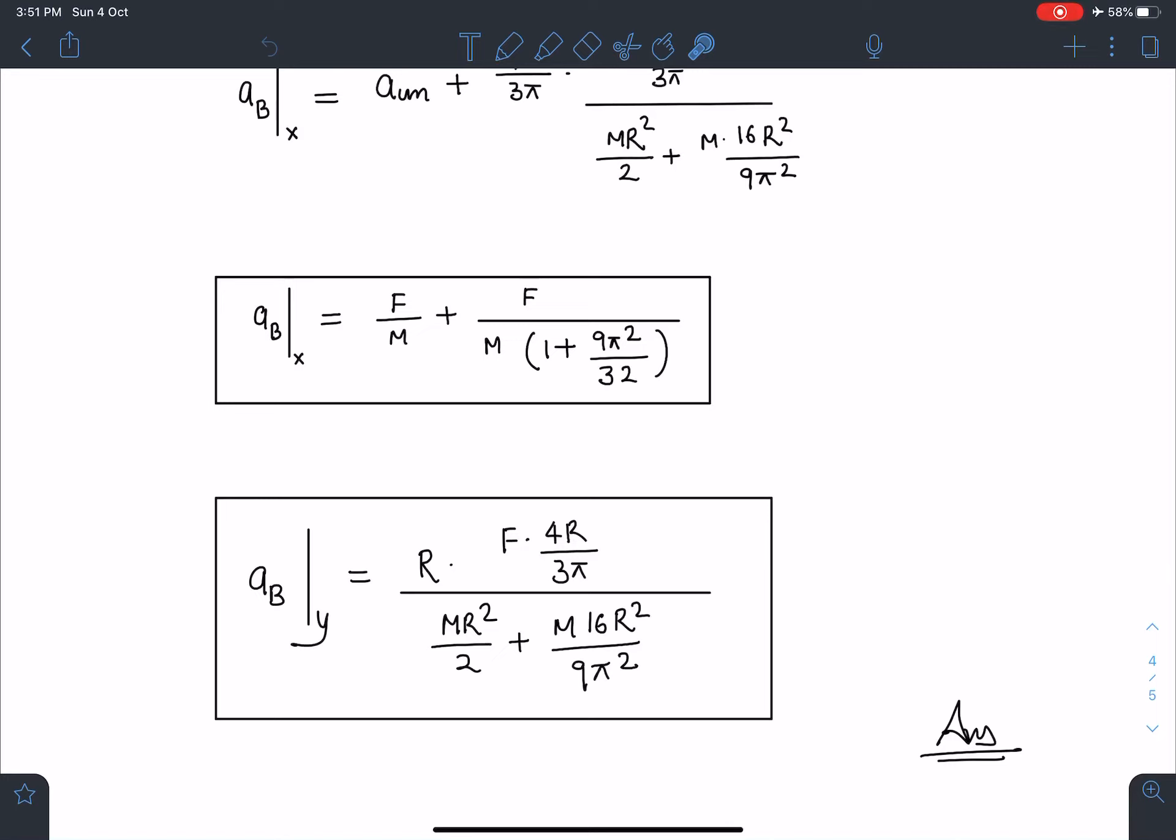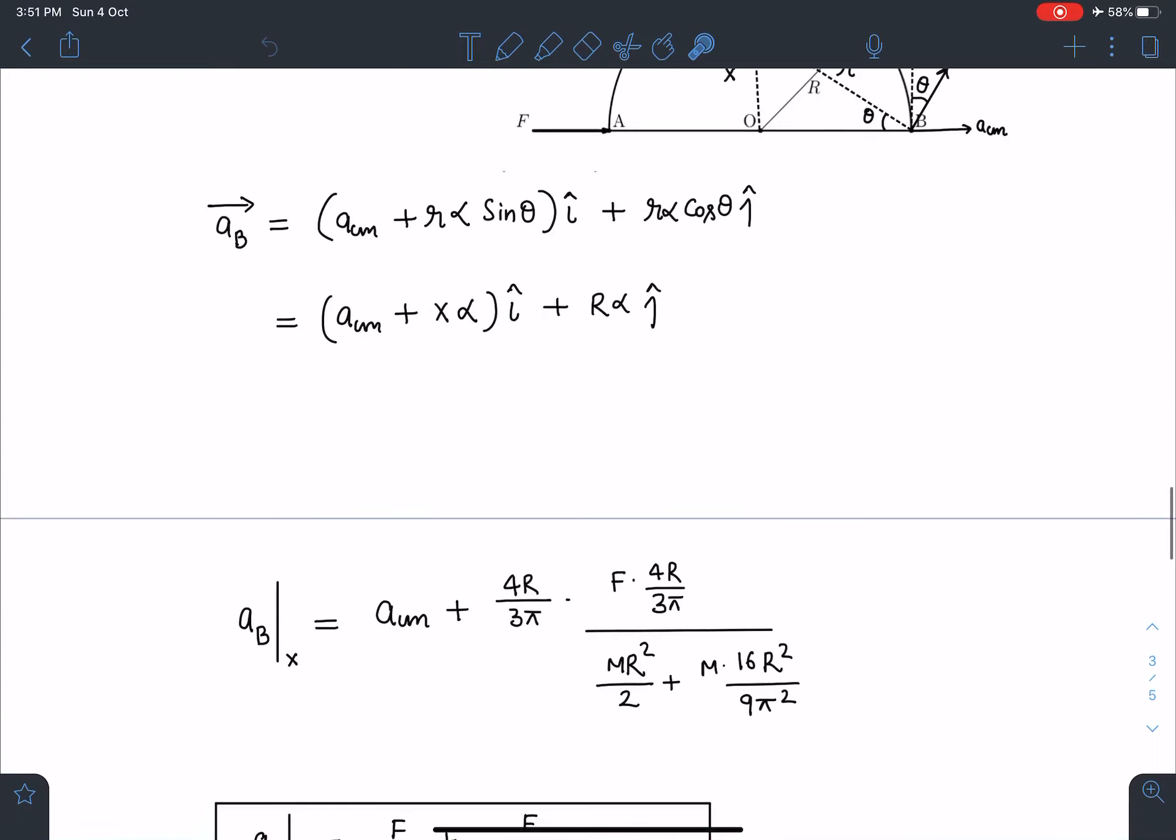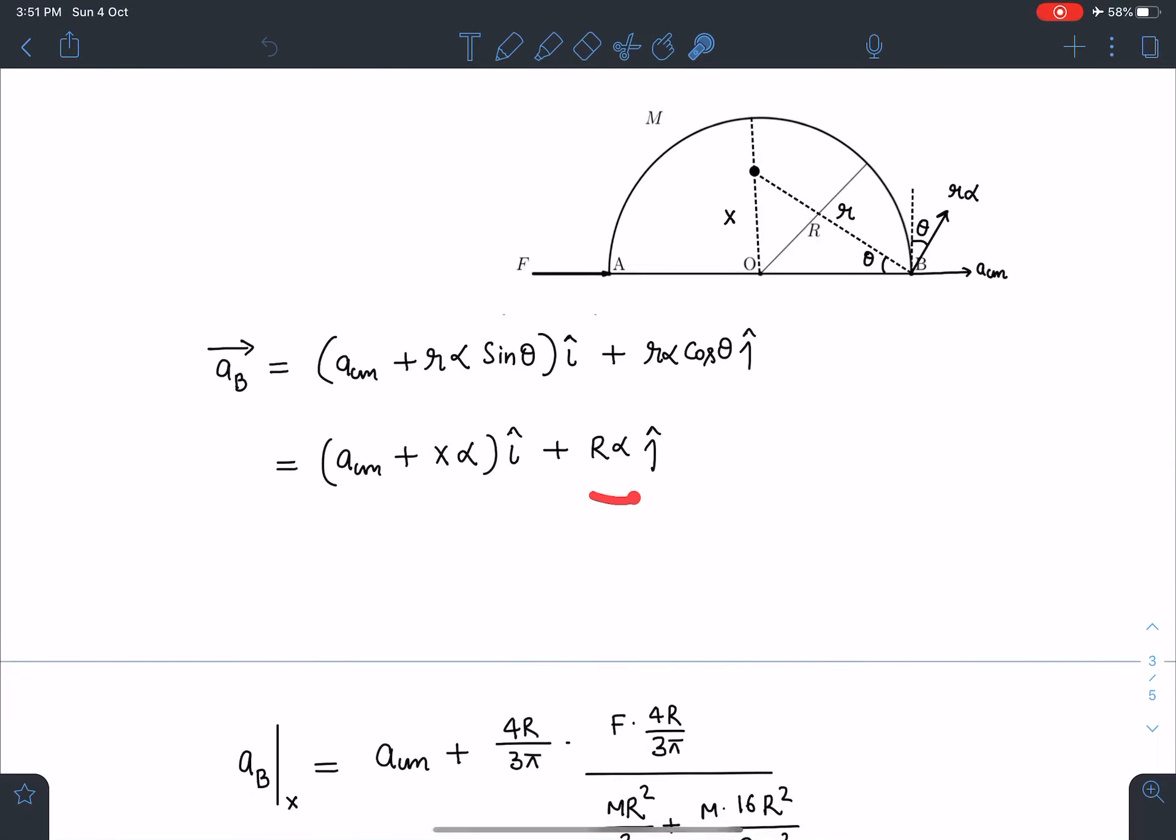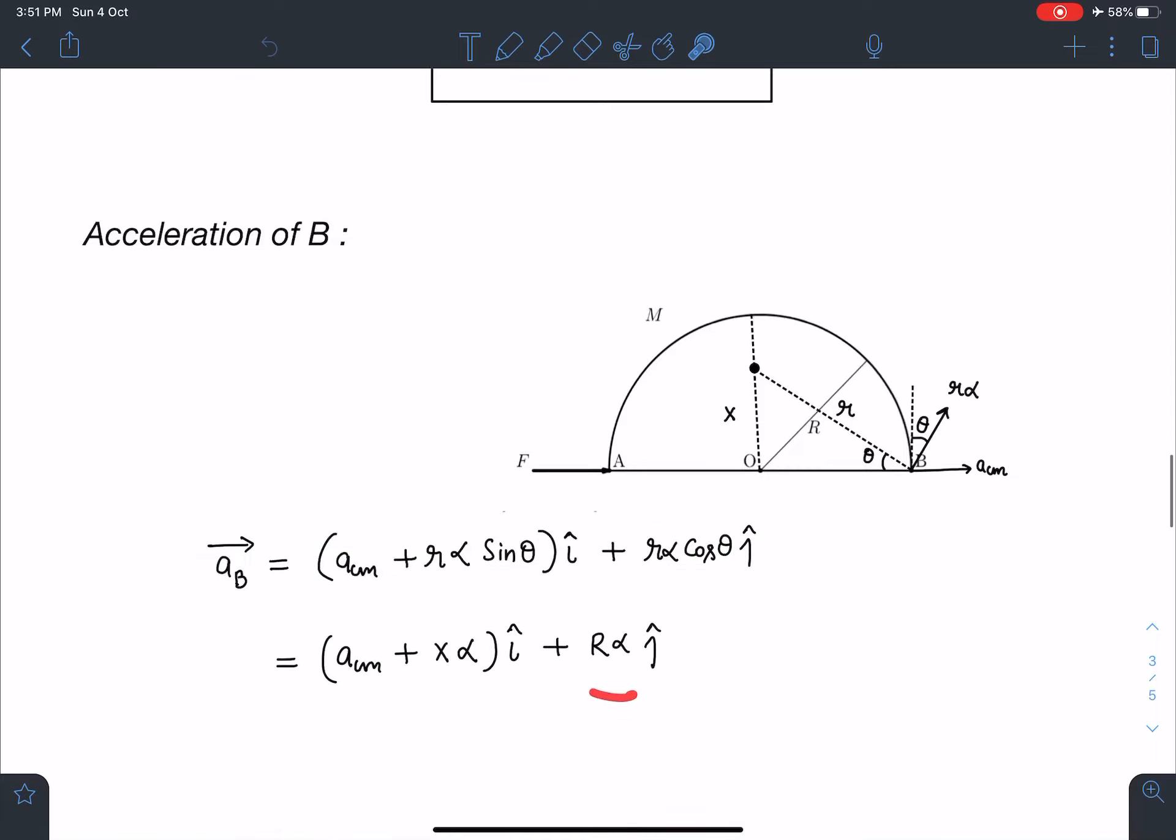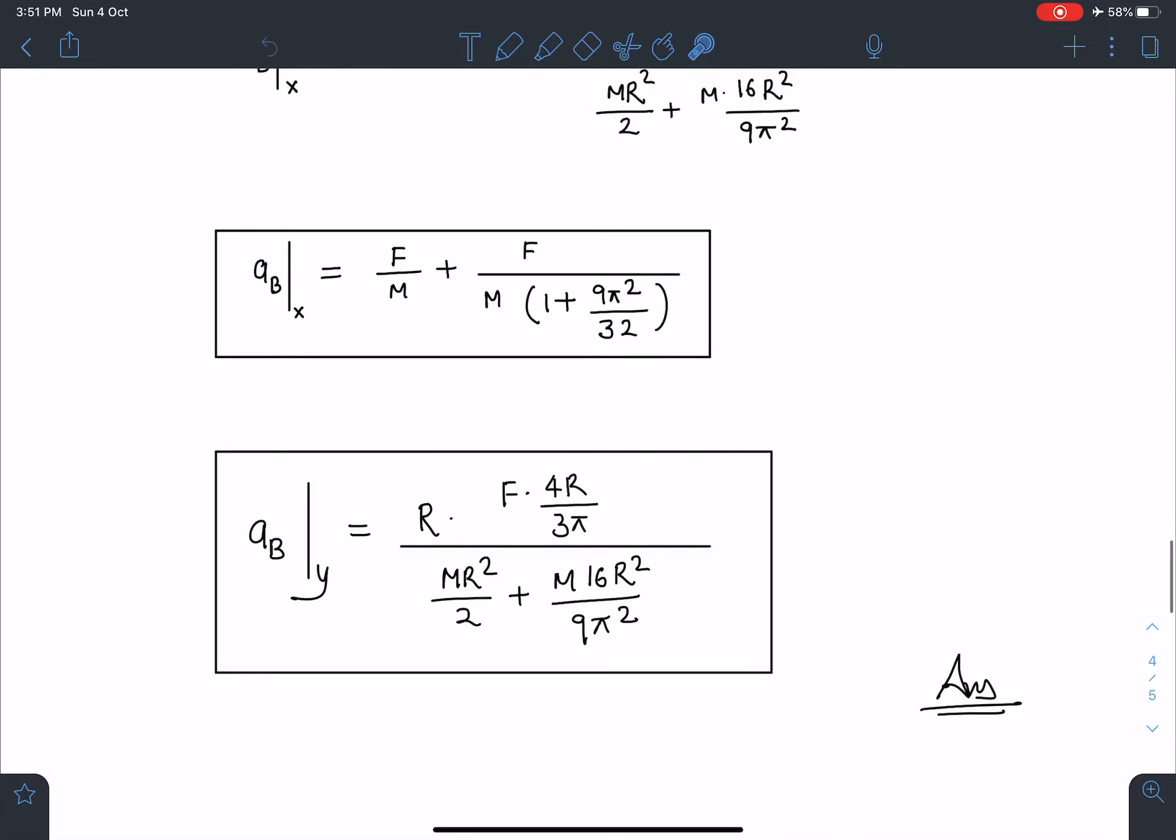The numerical part where values you have to substitute: acceleration of B in the y direction was capital R alpha, so R times this alpha value we are going to substitute. Once we know x component and y component, we will know the total acceleration of point B. Similarly, we can do the calculation for all other problems also. This is it. I hope you can do the calculation part.